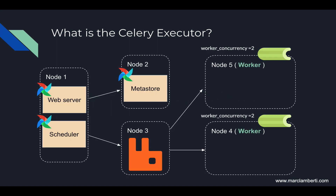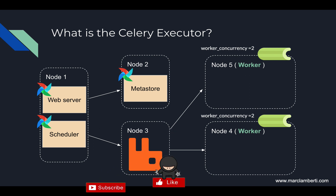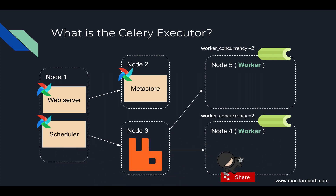Here is an example of architecture with Airflow and the Celery executor. The scheduler and the web server of Airflow are both running in node 1. The metastore on MySQL is running in node 2. RabbitMQ is waiting to receive tasks in node 3, and workers are waiting for tasks to execute in nodes 4 and 5.